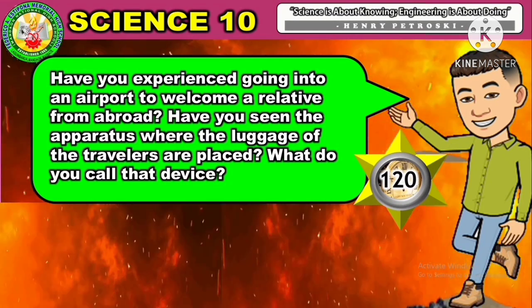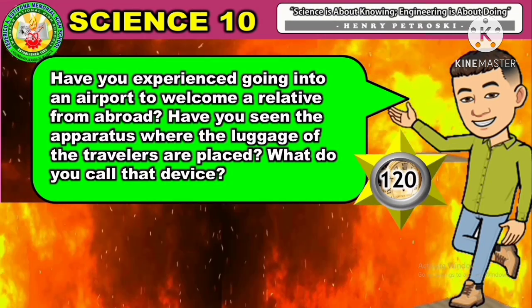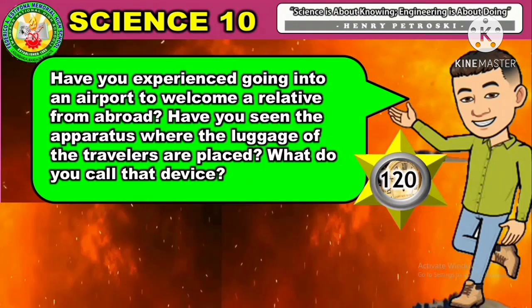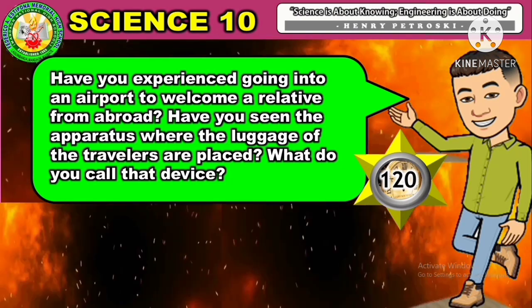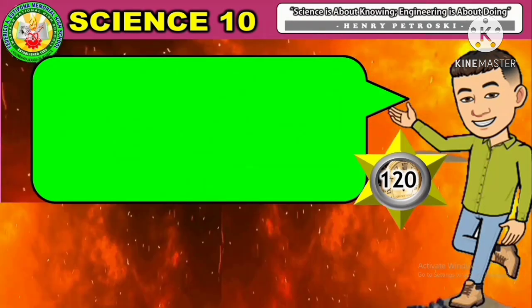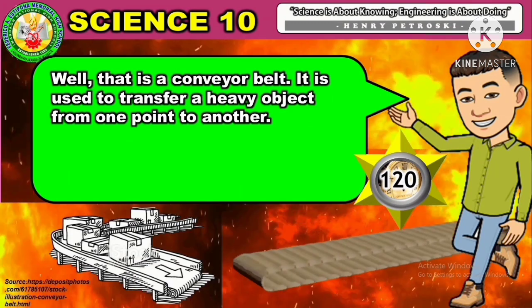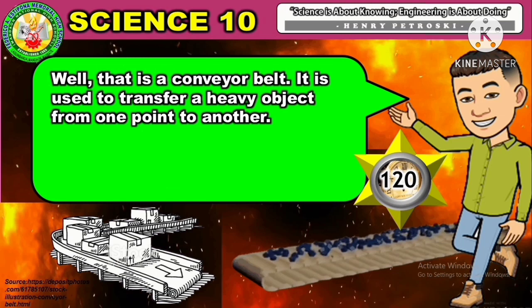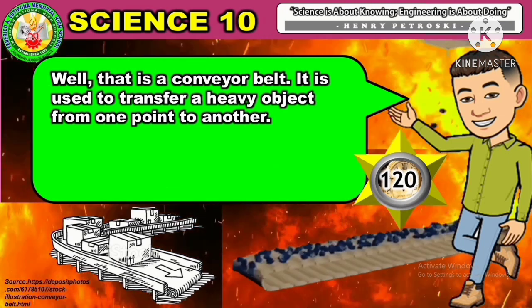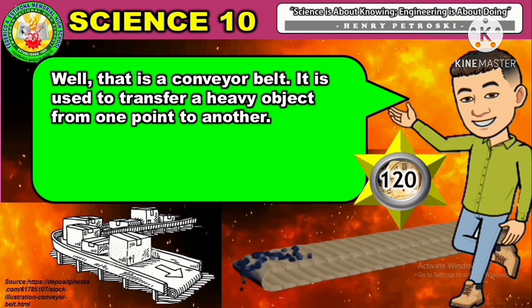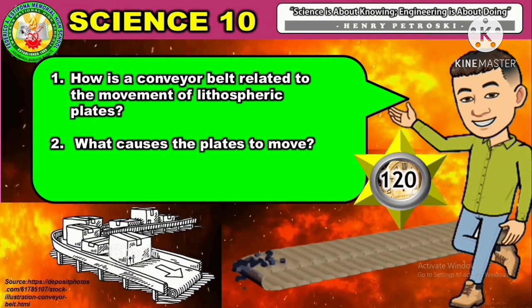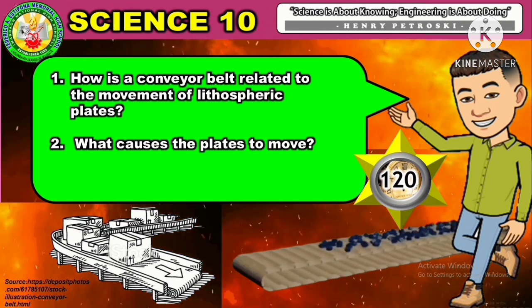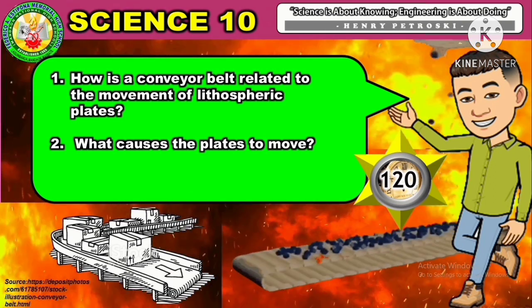Have you experienced going into an airport to welcome a relative from abroad? Have you seen the apparatus where the luggage of travelers are placed? That is a conveyor belt — it is used to transfer a heavy object from one point to another. Below is a picture and an animation of a conveyor belt. Using the figure and animated conveyor belt, answer the following questions for 2 minutes.